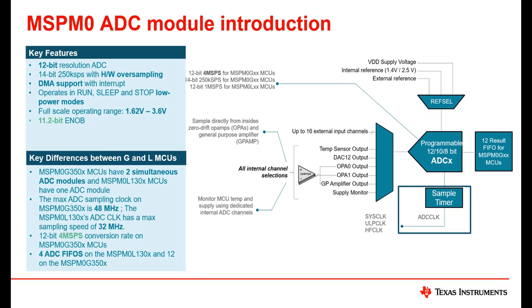MSPM0 offers a variety of clock configurations for the sample clock. The ADC for the MSPM0 G series can have a sampling clock up to 48 megahertz, while the MSPM0 L series offers up to 32 megahertz for the sampling clock.